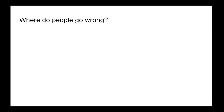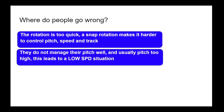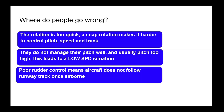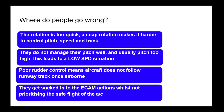So where do people typically go wrong when doing an AFATO exercise? The rotation is too quick — a snap rotation makes it harder to control pitch, speed, and track. They do not manage pitch well and usually pitch too high, leading to a low speed situation. Poor rudder control means the aircraft does not follow the runway track once airborne. Or they get sucked into the ECAM actions whilst not prioritizing the safe flight of the aircraft. These errors can be avoided through a comprehensive brief and lots of practice.